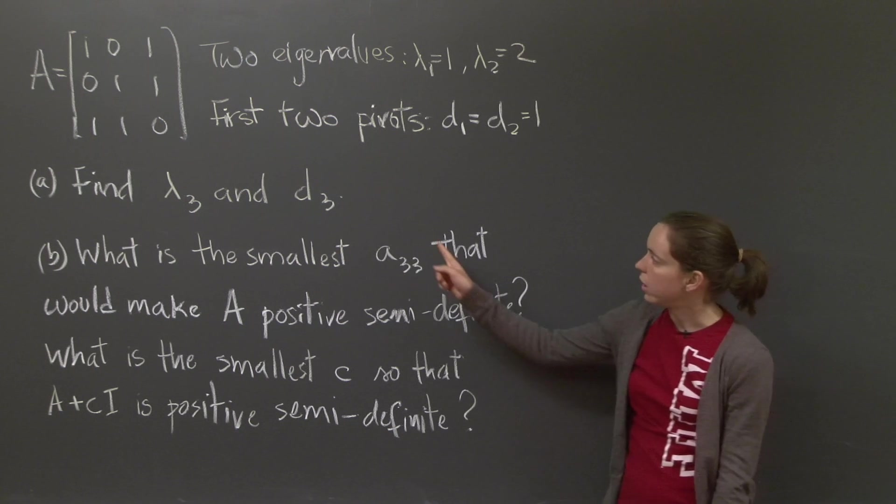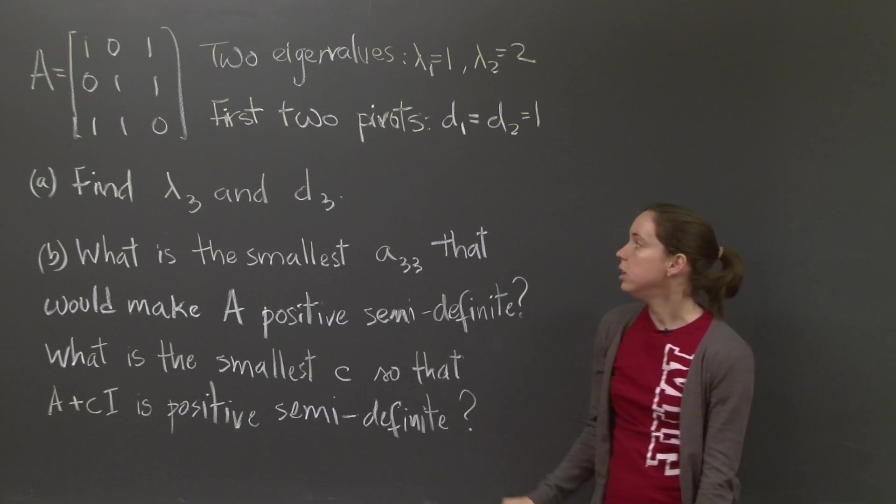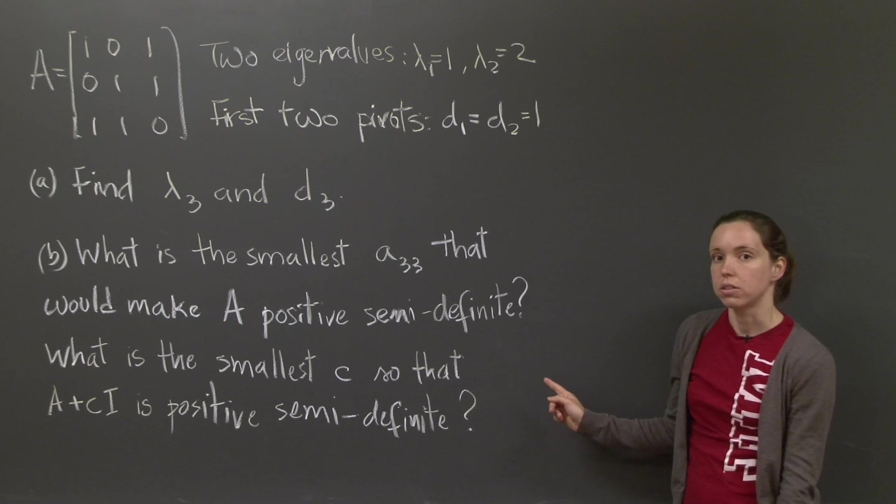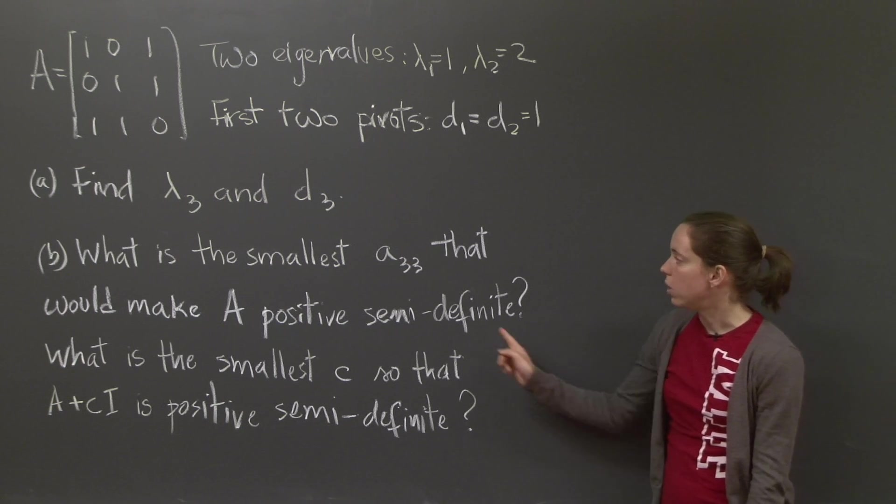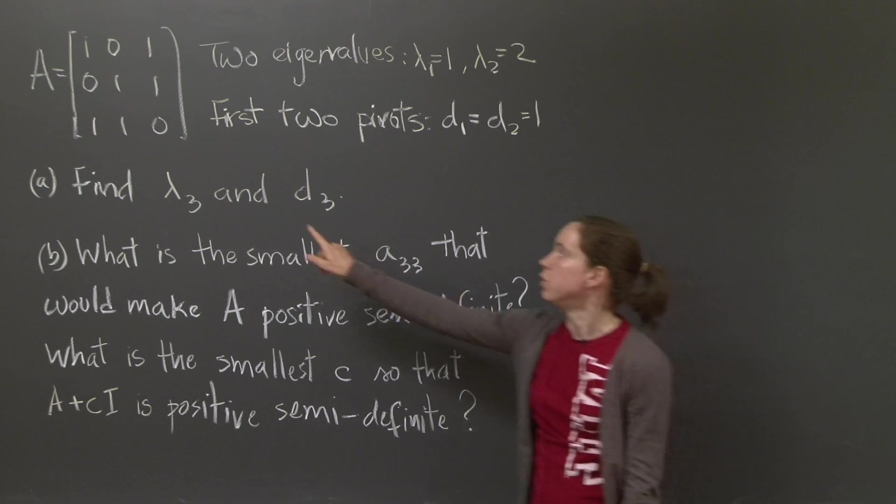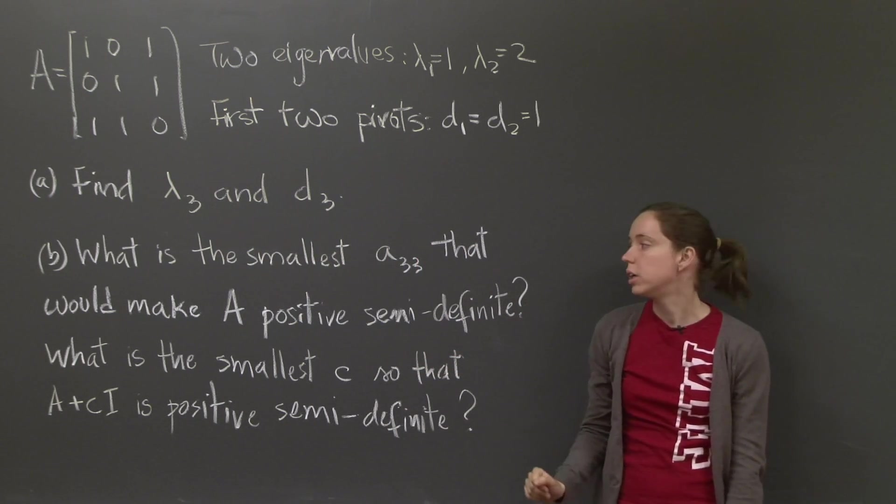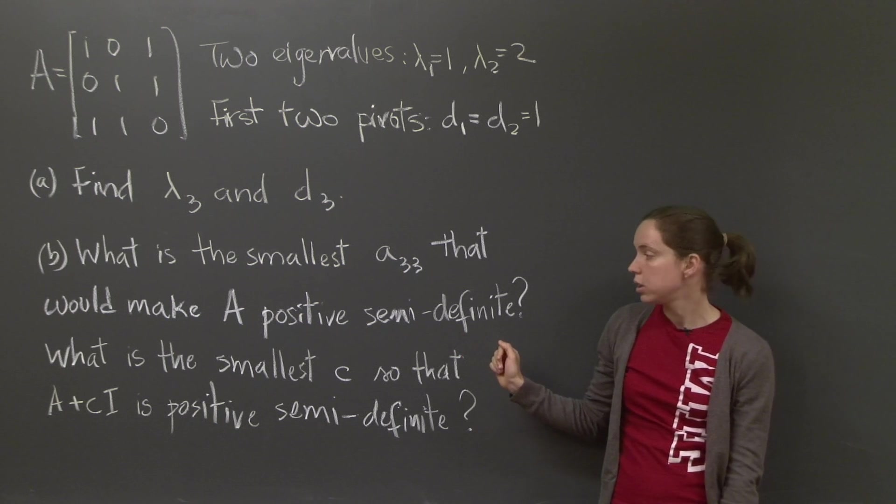The first one is find lambda 3 and d3, the third eigenvalue and the third pivot. And the second one asks you, what is the smallest A3,3? So if you can change this entry, what is the smallest number that you can put there that will make the matrix A positive semi-definite?